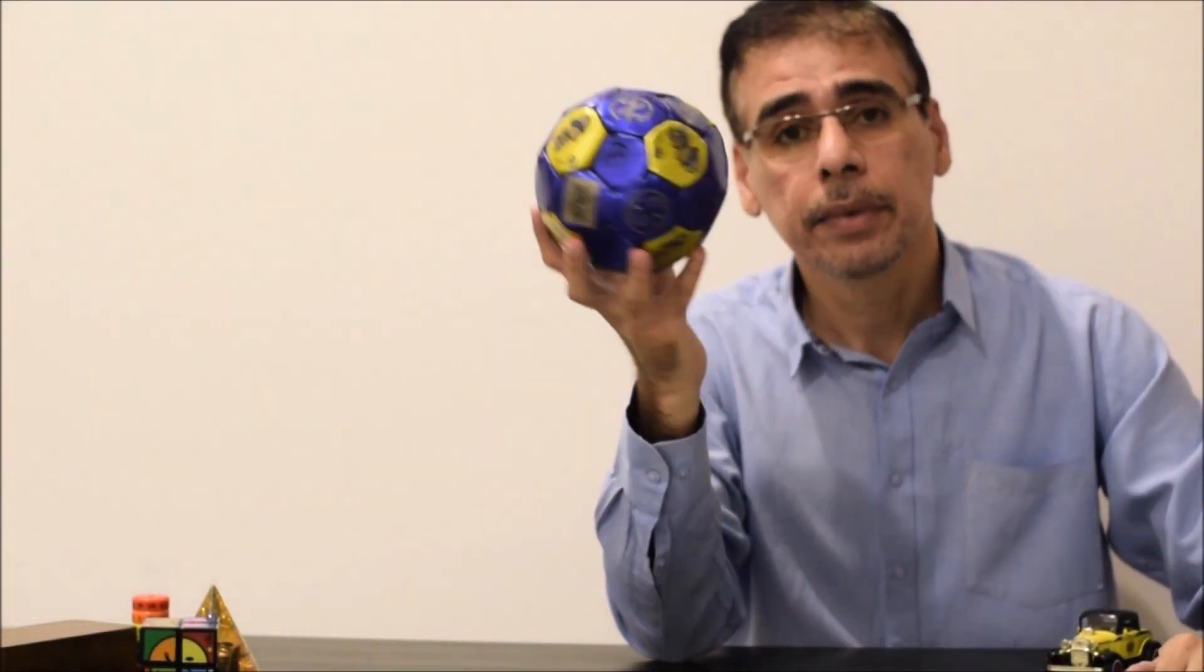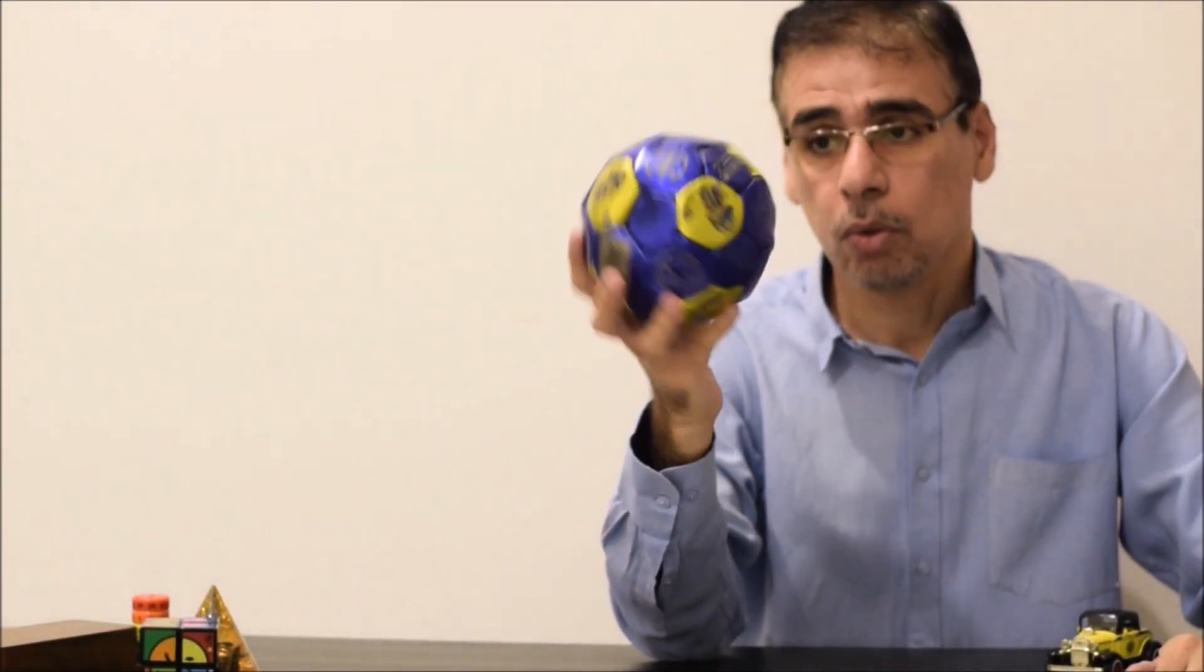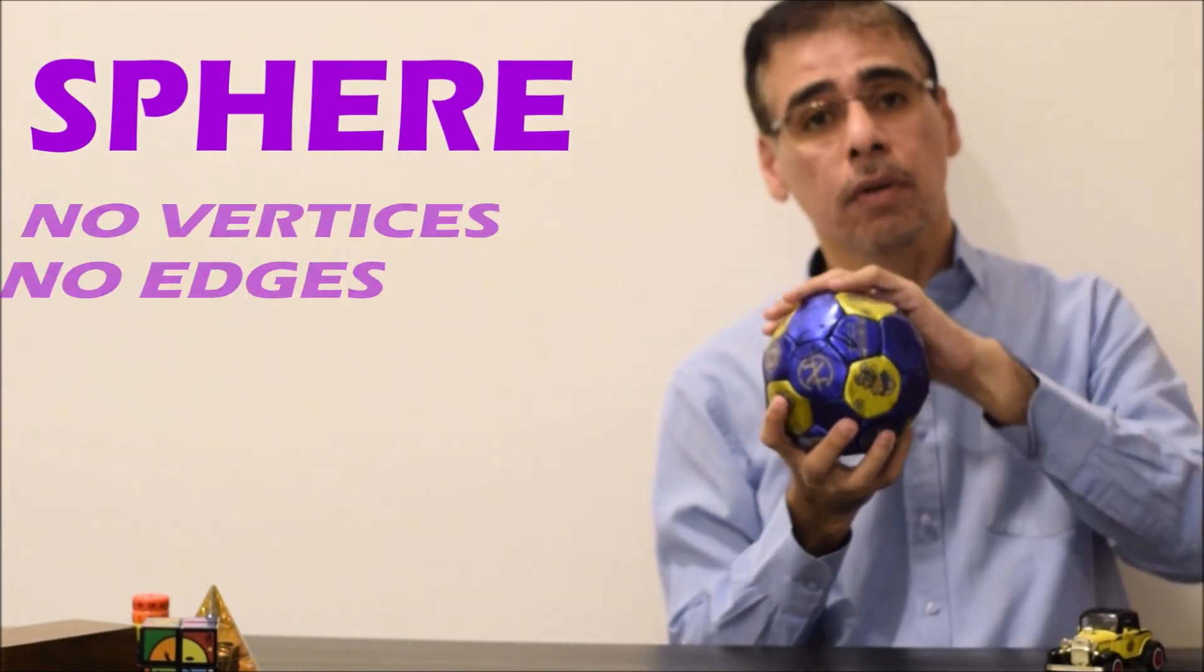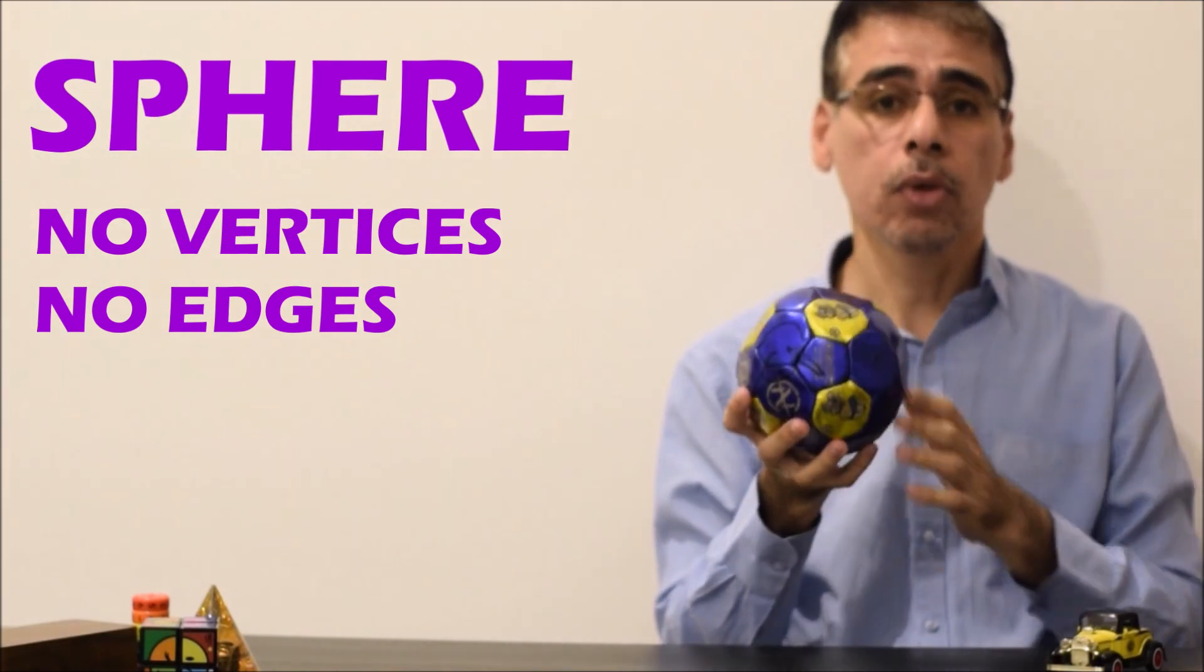And finally, this shape, we don't call it a ball. We call it a sphere. And as you can see, it has no vertices, and it has no edges.